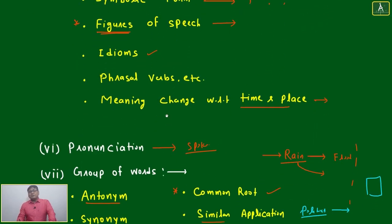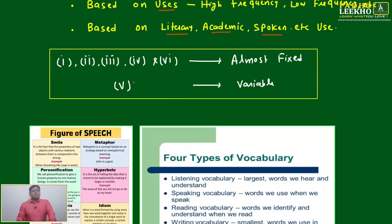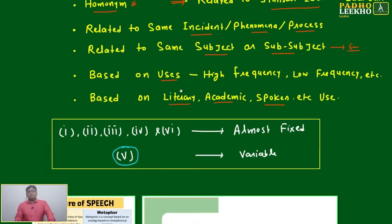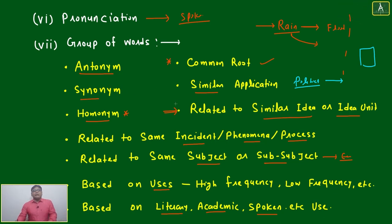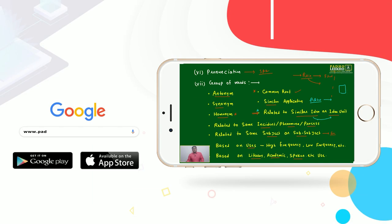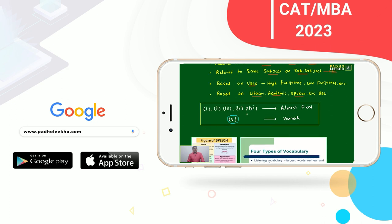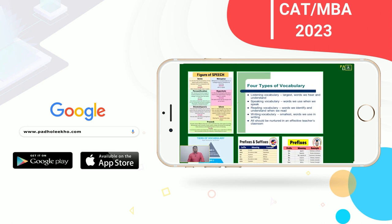Point number five — groupism — we have to give much stress on this. This is also almost fixed: antonym has limitations, synonym has limitations. Here the variable is the idea unit — we can make groups in different innovative ways related to idea or idea unit. But for context of use, we must be very careful.